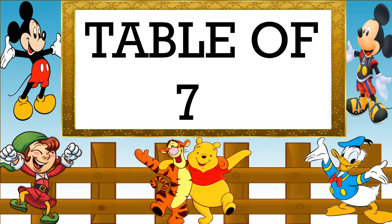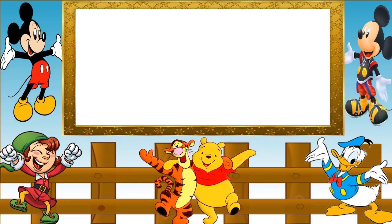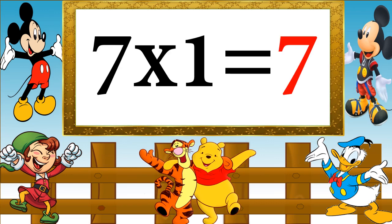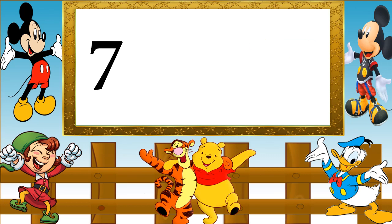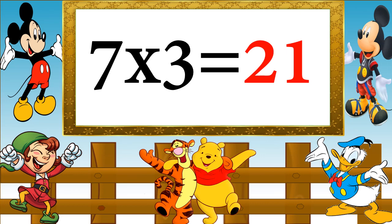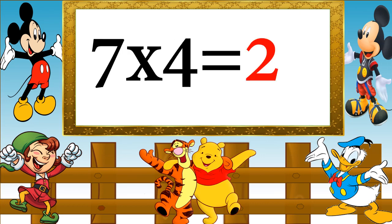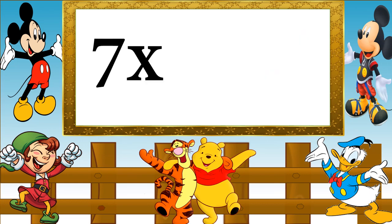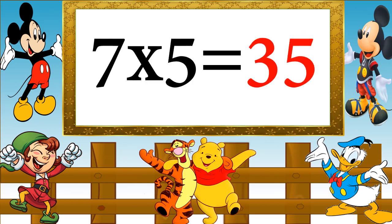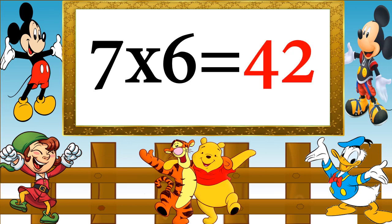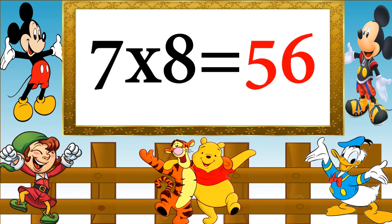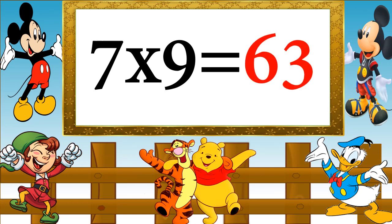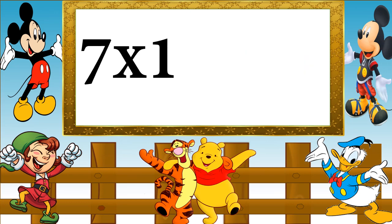Table of 7. 7 ones are 7, 7 twos are 14, 7 threes are 21, 7 fours are 28, 7 fives are 35, 7 sixes are 42, 7 sevens are 49, 7 eights are 56, 7 nines are 63, 7 tens are 70.